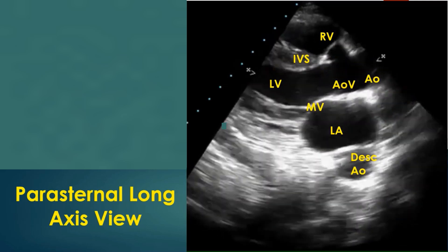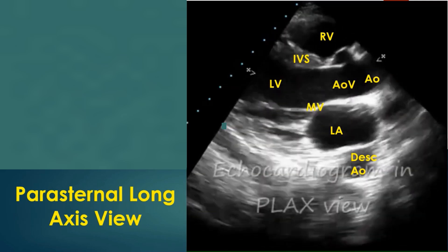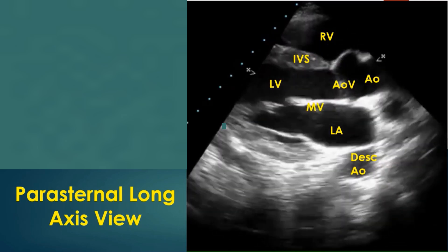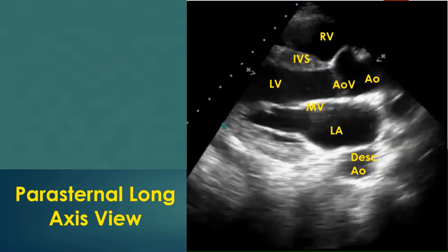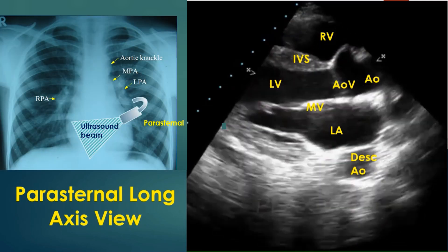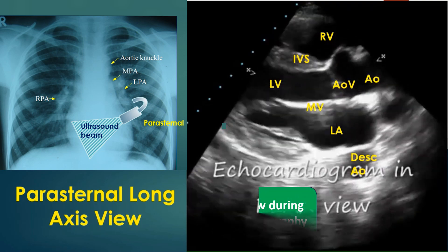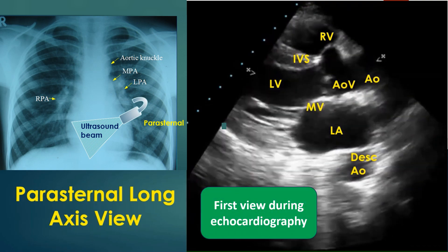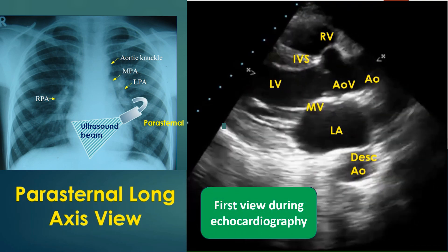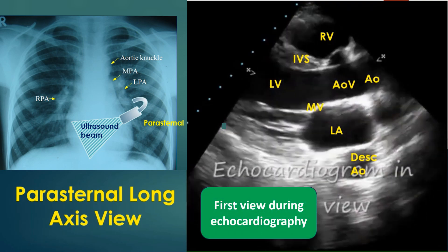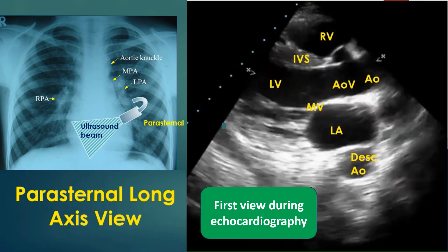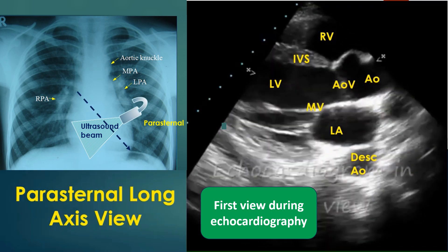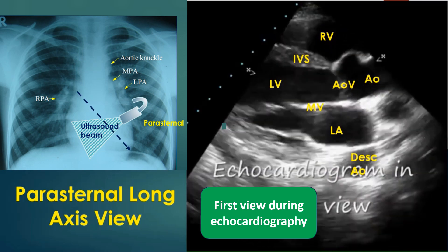Parasternal long axis view is usually the first view obtained during echocardiography. It is obtained by keeping the transducer in the left parasternal region with the subject in the left lateral position. The beam cuts the heart in its base to apex axis.